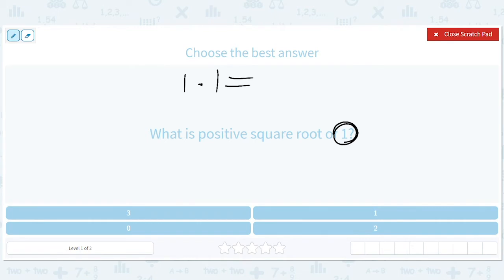So one times one equals one. One is the square root of one.